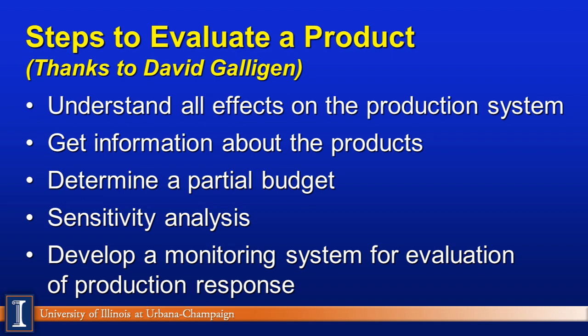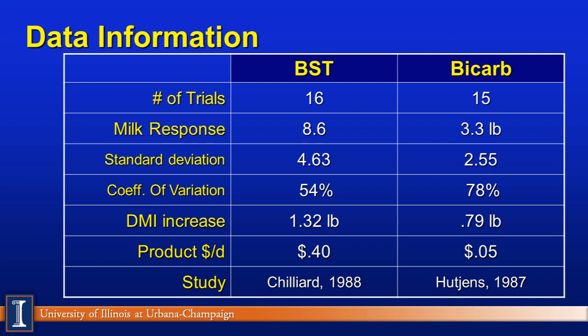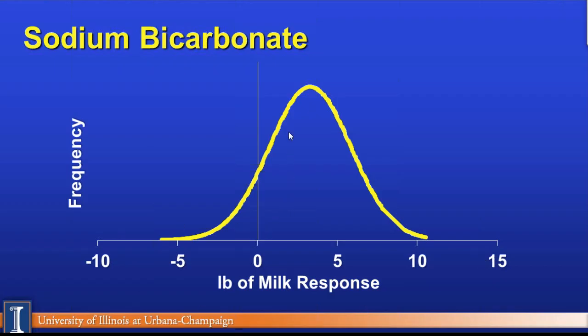In a meta-analysis, they look at all the research, do a partial budget analysis, a sensitivity analysis, and run it through statistical software. Studies with 60 animals have more power than those with 6. For bicarb, there were 15 journal articles. The milk response shows pretty big variation — the more variation, the more cows it takes to determine the response. The bell-shaped response curve peaks around 3.3 pounds.